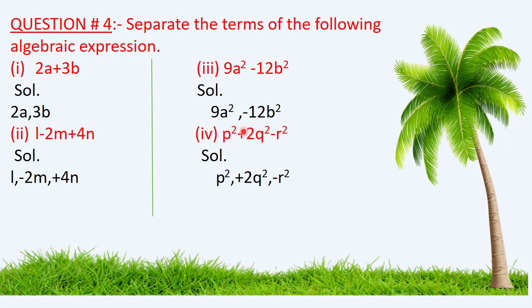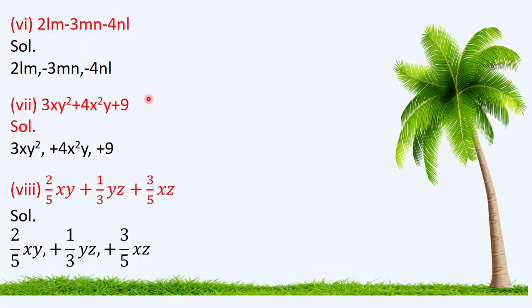In the fourth part of Question 4, it is very easy to separate the terms — just put the comma between the terms. Similarly for part 6, the expression is 2lm − 3mn − 4nl. In the solution, just insert a comma between the terms: 2lm, −3mn, and −4nl.